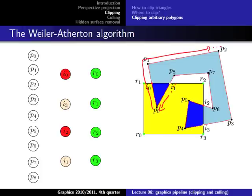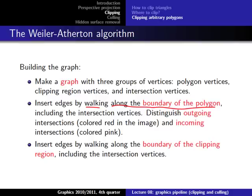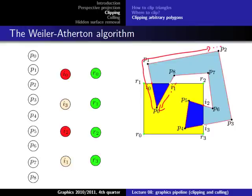Each time we pass an intersection point, we add an edge, and we distinguish between outgoing and incoming intersections. An outgoing intersection is when we go from inside the view frustum to the outside. An incoming intersection is when we go from outside into the view frustum. I've used different colors to indicate them because this information is important when we want to extract the solution from the graph.